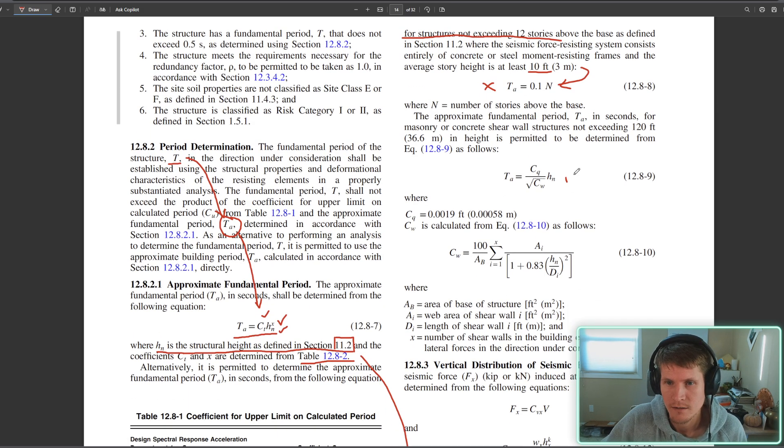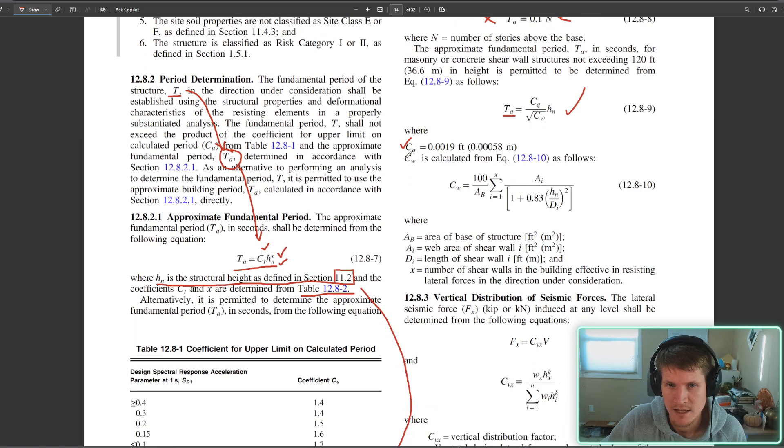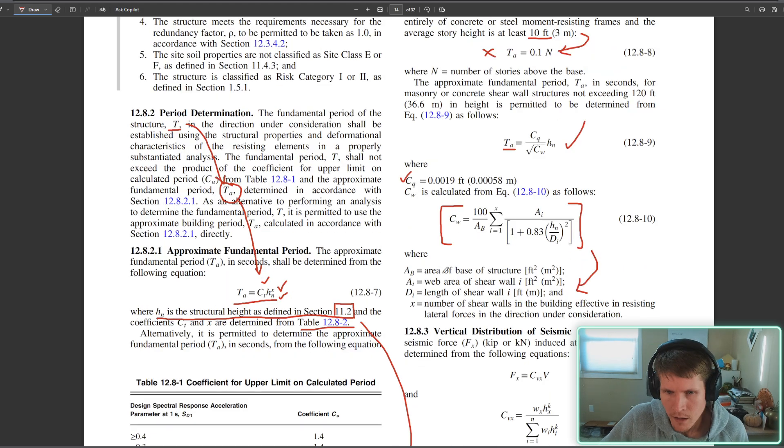You have another approximate period equation which is this one for masonry or concrete shear wall structures not exceeding 120 feet in height. That is building one for us, so we could technically use this. We look further here - we have three variables. One of them is provided here as a constant. The other, C_w, has this honking ass equation.